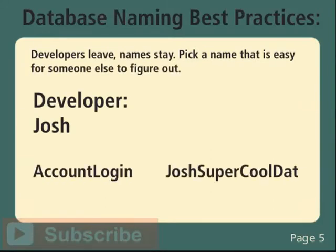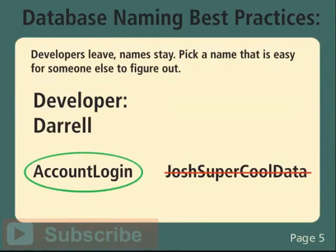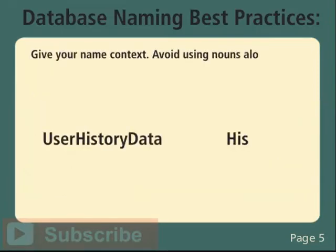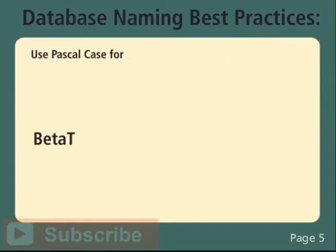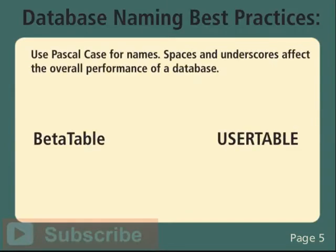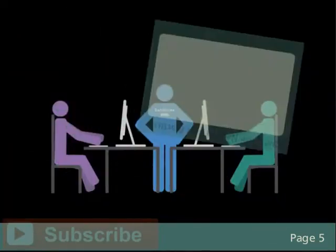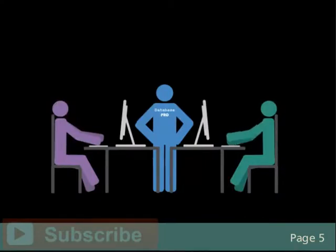Developers leave. Names stay. Pick a name that is easy for someone else to figure out. Give your name context — avoid using nouns alone, like 'text' or 'timestamp'. Use Pascal case for names, as spaces and underscores affect the overall performance of a database. Learn and use the already established naming conventions for the company you're working for, as they may differ from the SQL community's conventions.